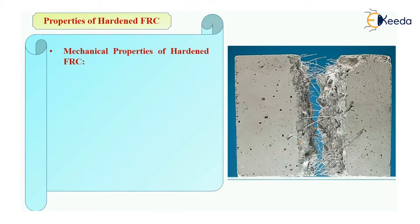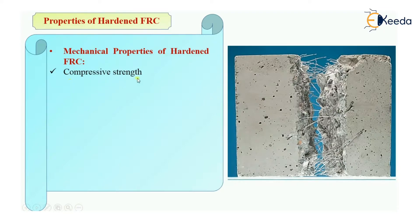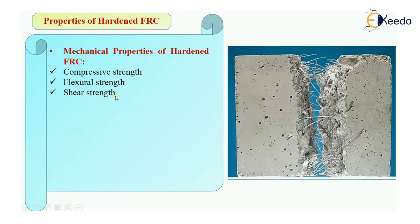The properties of hardened fiber-reinforced concrete will be categorized into two types. First will be mechanical properties and then we will see physical properties. The mechanical properties of hardened FRC are: compressive strength, flexural strength, shear strength, torsion strength, and toughness.